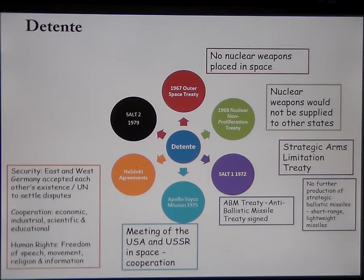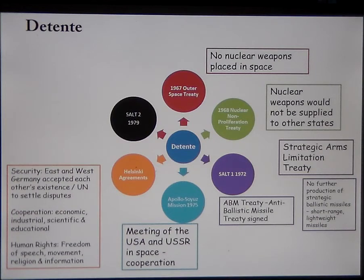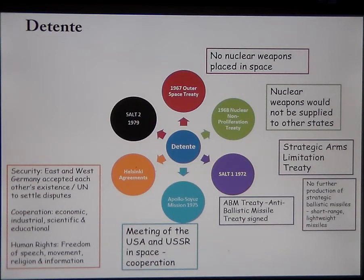In 1975, you get the Helsinki Agreements, based on three big principles: security, cooperation, and human rights. Thirty-five countries attended, including the USSR and the USA. Key decisions included East and West Germany accepting each other's existence, agreement that the UN would be used to settle disputes, and that foreign representatives could observe large military manoeuvres.